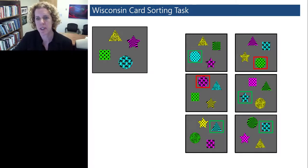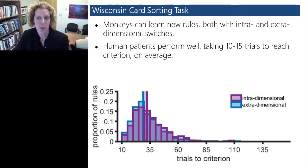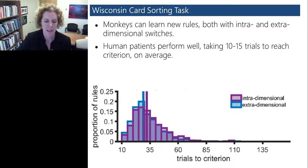In this task, after a subject reaches a criterion level of performance on a given rule, then the rule will be switched without any instruction to the subject. At that point, the subject will need to learn again a new rule through trial and error. We found that monkeys and humans can perform this task. Monkeys are able to learn new rules. Within each session, they can learn about 30 to 40 new rules with both intra and extra dimensional shifts. An intra dimensional shift would indicate a switch within a given feature that is either color, shape or texture, but switching between specific instances of that feature. An extra dimensional shift would include switching across features. Monkeys can perform this task, taking about 30 trials to reach criterion for each switch. Human subjects also perform this task really well, taking about 10 to 15 trials to reach criterion.